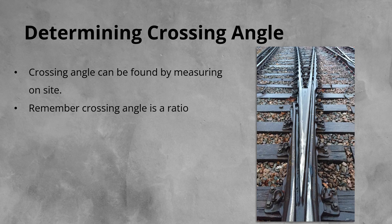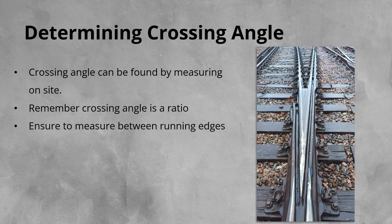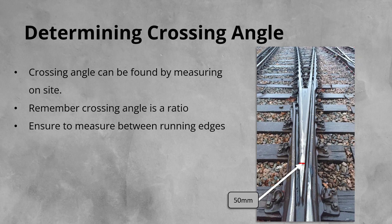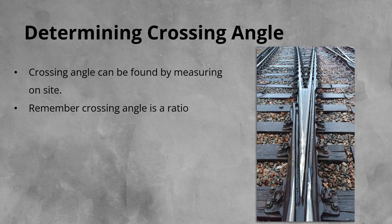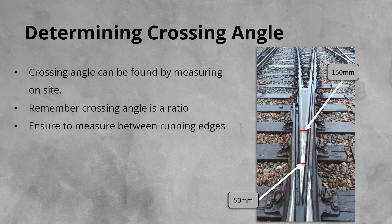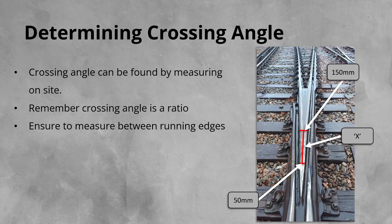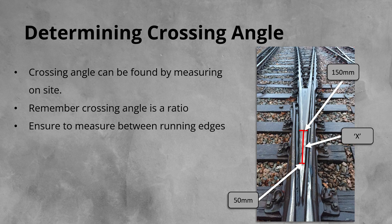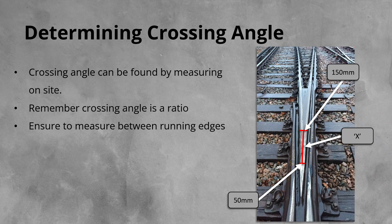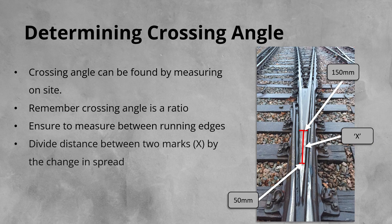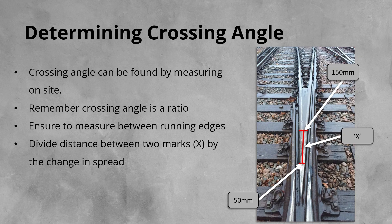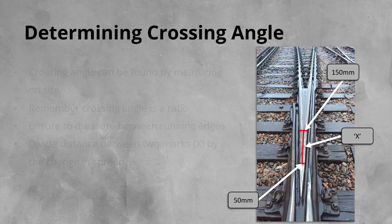So, we take a measurement between the running edges behind the V and find where the edges are 50mm apart, and mark that point. Then we need to find the point where the edges are 150mm apart and mark there also. Then we measure the distance between the two points down the center line of the crossing, remembering to use millimeters still. The distance between the two marks is then divided by the change in the spread of the crossing legs, in this case 100mm.